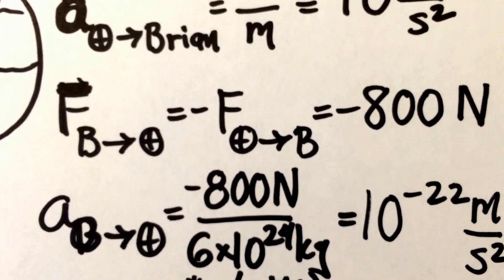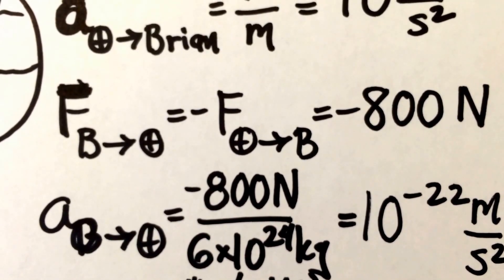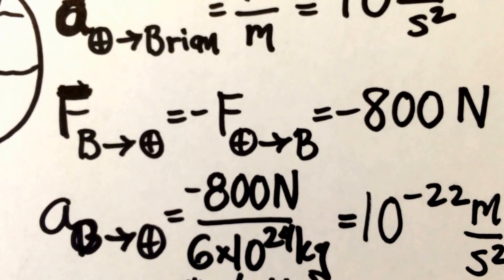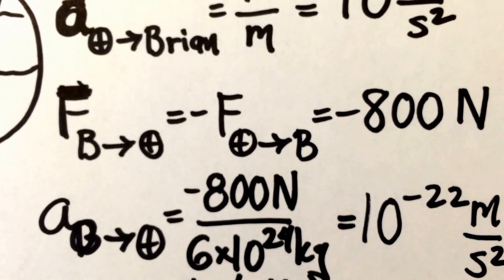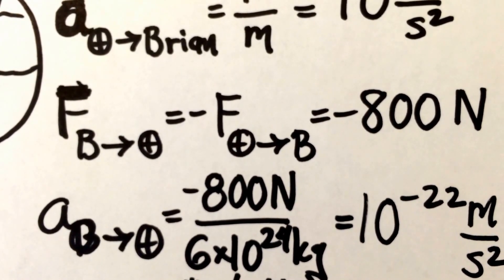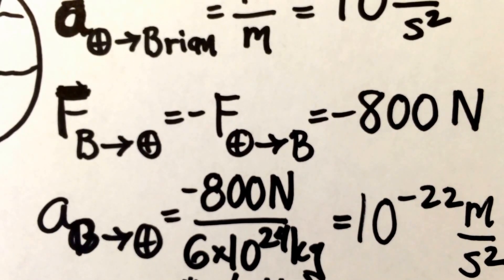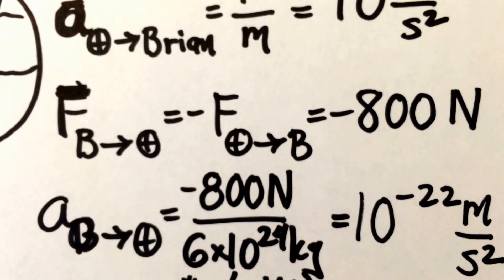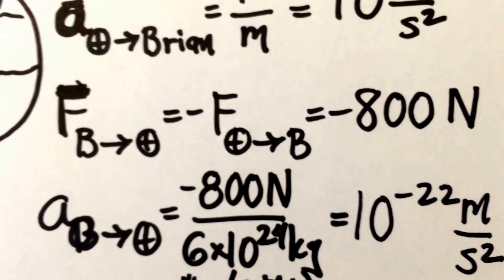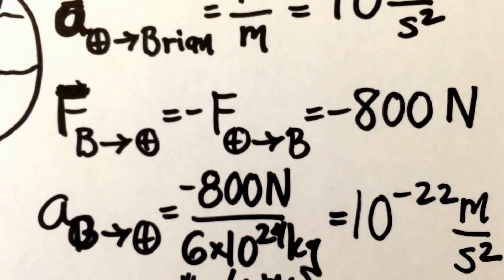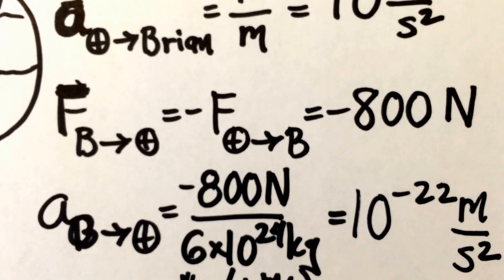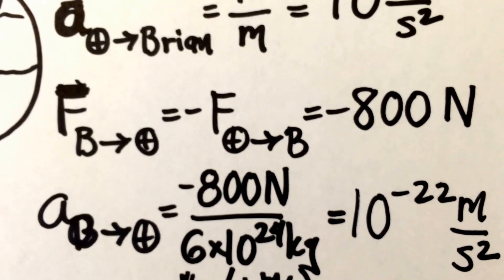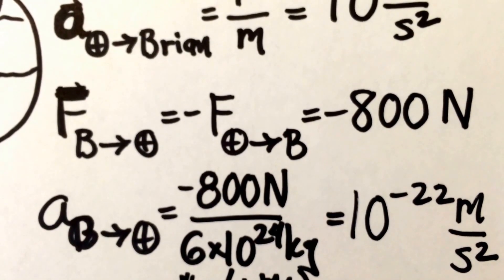So there's the acceleration of Brian on the Earth: 800 Newtons divided by the mass of the Earth, 6 times 10 to the 24 kilograms, gives an acceleration of 10 to the minus 22 meters per second squared. So if I were floating in space next to the Earth, that's the amount of acceleration that I would induce on the Earth.